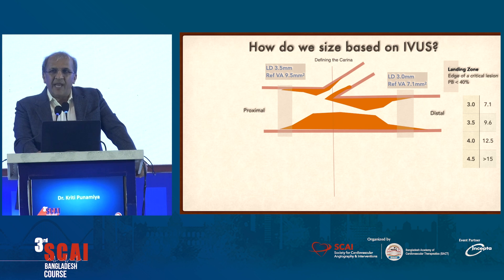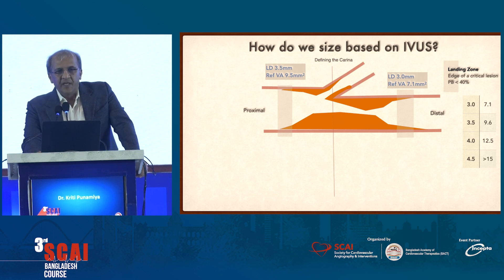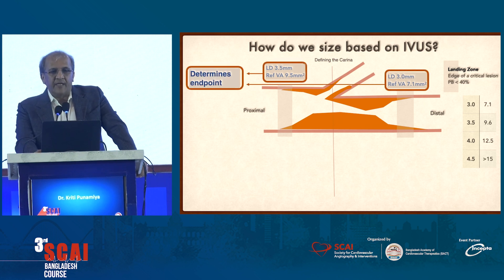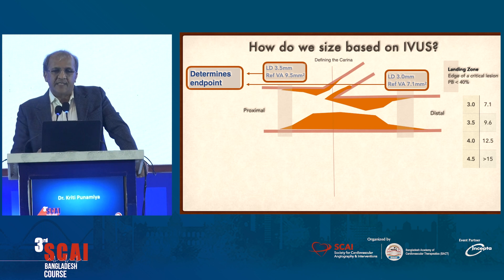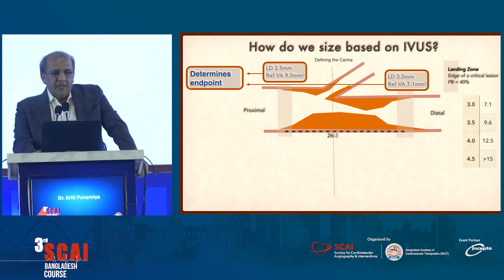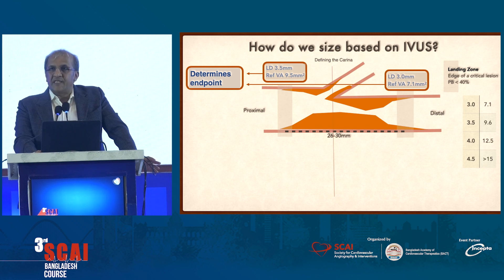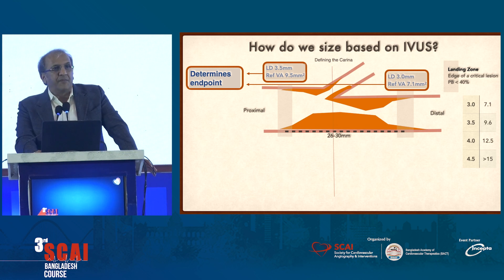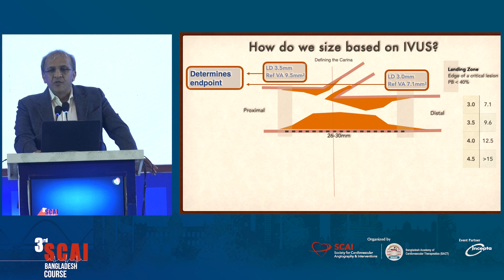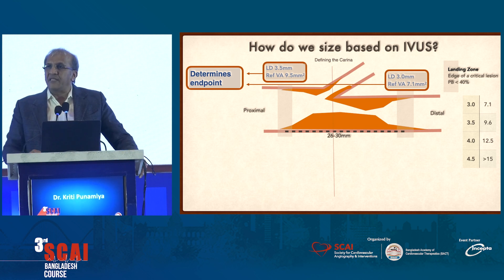When we have our two landing zones determined, it's very easy to get our endpoints, and this is what I talk about — getting an endpoint before you start a case. What are those endpoints? We know that we could use any stents between 26 and 30, because some labs would have a 26, some would have a 28, some would have a 30 millimeter in a particular brand and size. So that's why landing zones have to be bands and not a line.